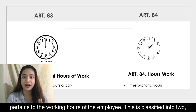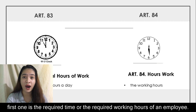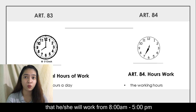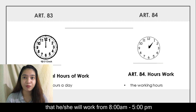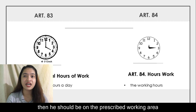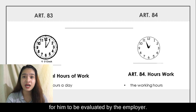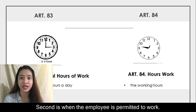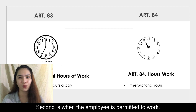This is classified into two. The first one is the required working hours of an employee — this is when an employee signs a contract that he or she will work from 8 to 5 p.m., and he should be on the prescribed working area for him to be evaluated by the employer. The second is when the employee is permitted to work.